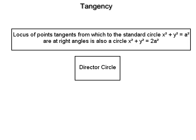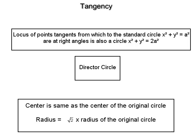For a director circle, the radius is √2 times the radius of the original circle, and it is concentric with the original circle.